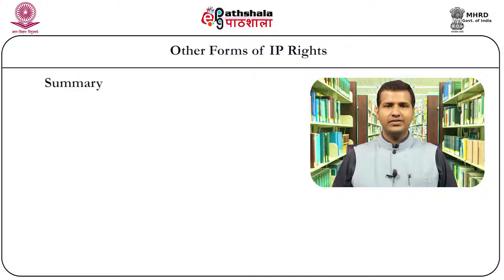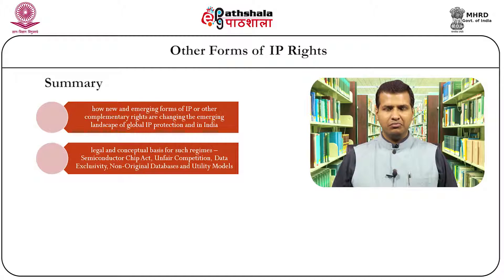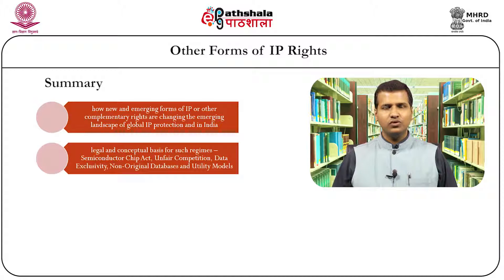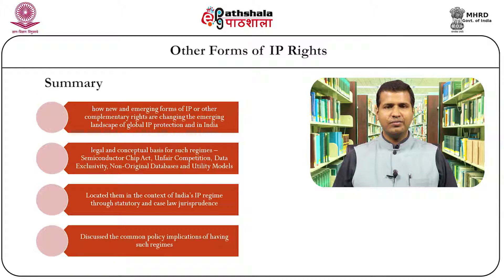In summary, we have discussed how new and emerging forms of intellectual property or other complementary rights are changing the landscape of global and Indian IP regimes. We have looked into the legal and conceptual basis of such regimes by examining specific legislations like the Semiconductor Chip Act, several decisions involving unfair competition, the demands for data exclusivity, the concept of patent linkage which has been rejected in India, non-original databases which are not statutorily provided but where some judicial decisions point towards protection, and the need and demand for utility models legislation. We have located these acts and regimes in the context of India's statutory and case law jurisprudence, and discussed the common policy implications of having such regimes. With this, we conclude the module. Thank you very much.